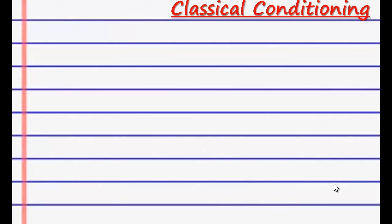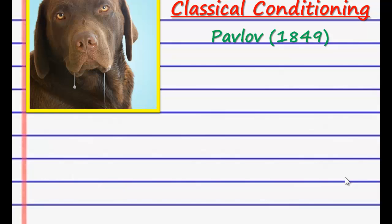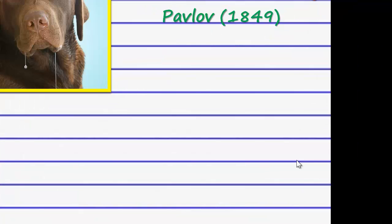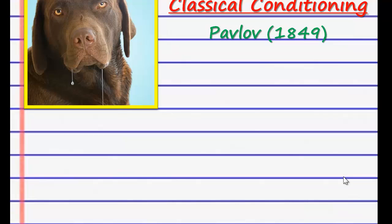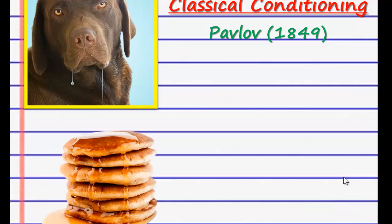Let's start with classical conditioning. Classical conditioning was pioneered by a physiologist — not psychologist — a physiologist by the name of Ivan Pavlov. He did a series of studies involving dogs, starting in 1849 and ending around 1936, because he did it for years. Pavlov was investigating the process of salivation in dogs, but along the way he found out something that became very useful to psychologists. What Pavlov observed is that whenever he showed food to the dogs, they would begin to salivate or drool.